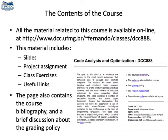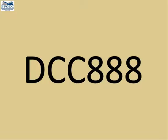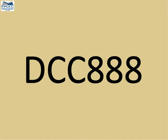All the information you need to follow the course is available at the course's webpage. You can find all the slides, the project assignments, exercises, and much more there. I suggest you save the URL if you are really determined to take this course. Another option is to simply type DCC888 in Google or some other search engine — that's the code of the course at our university. Usually the first page that pops up is the course's webpage. Currently we have 24 classes. There are also some classes about LLVM, which is the compiler we use in the first two assignments.